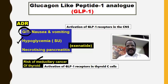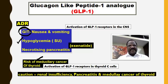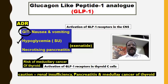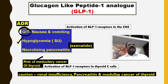As a take-home message, three important points: GLP-1 analogs should be used cautiously or avoided in patients with renal insufficiency, pancreatitis, and those with a history of medullary cancer of the thyroid. That covers the important points on GLP-1 analogs.